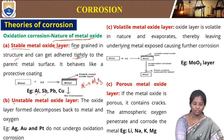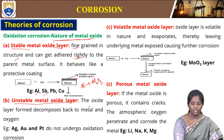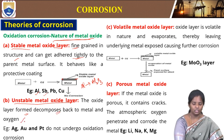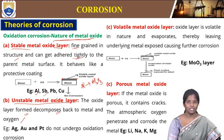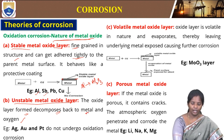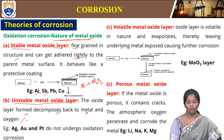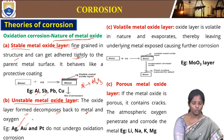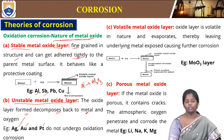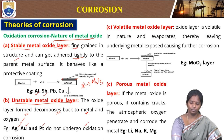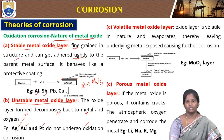In unstable metal oxide, the oxide layer formed decomposes back to metal and oxygen. By the name itself we understand that the metal oxide layer that is formed is unstable, so it will go back to metal and oxygen. Examples are silver, gold, and platinum — they do not undergo oxidation corrosion and will not proceed further.